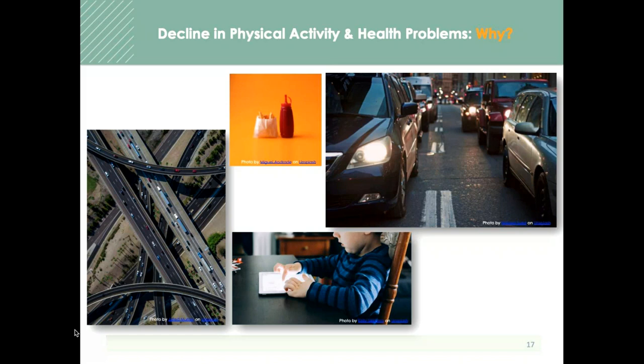We're struggling with health problems and decreased physical activity due at least in part to the rise of the automobile in the last decades and longer commute times and further distances between destinations. The automobile has very rapidly changed the picture of mobility around the world, particularly in North America. The flexibility and speed provided by the automobile have made it a very attractive option, and as a result, this has led to designing cities that also favored the car. Destinations are further apart, and green space and infrastructure for cycling and walking are deprioritized.